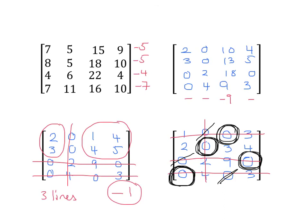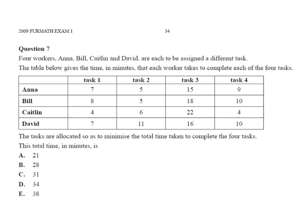We can now go back to our original slide and answer the question of what is the minimum time taken. We had Anna doing task 3, Bill doing task 2, Caitlin doing task 4, and David doing task 1. When we add those values together, 15, 5, 4, and 7, we get a total of 31. So our answer there is C, 31.